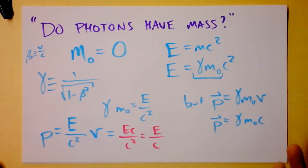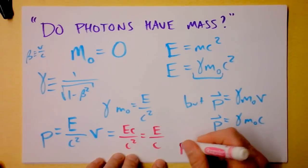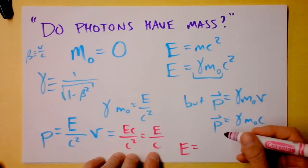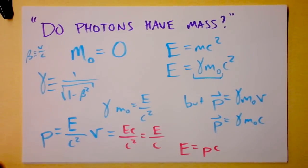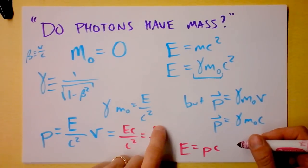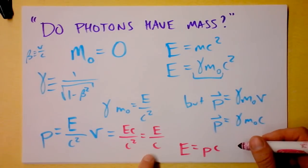And then we have another way to write the energy of a photon. Now we say that the energy of a photon is its momentum times the speed of light. That's pretty cool. And the momentum of a photon is the energy of that photon divided by the speed of light.